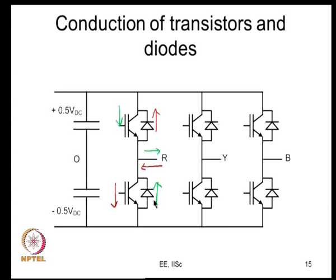During the dead time, one of the diodes will conduct. For the positive current direction it is the bottom diode that conducts, so the pole voltage is -VDC/2 during dead time even though ideally it should be +VDC/2 - hence the error. For the negative current direction, the top diode conducts during dead time and the pole voltage is +VDC/2. The pole voltage during dead time is determined entirely by the direction of current.